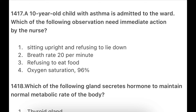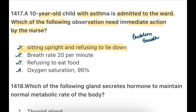For example, if you give nitroglycerin sublingually during angina chest pain, the response is seen within seconds. Next: A 10-year-old child with asthma is admitted to the ward. Which of the following observations needs immediate action by the nurse? Options: sitting upright and refusing to lie down, breathing rate 20 per minute, refusing to eat food, oxygen saturation 96%. If the child is sitting upright and refusing to lie down, it means the patient is having difficulty breathing. When sitting, the lungs can properly inflate, allowing easier breathing. The child fears that if they lie down, they won't be able to breathe — so option one is correct.